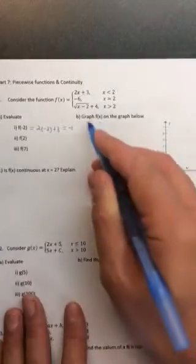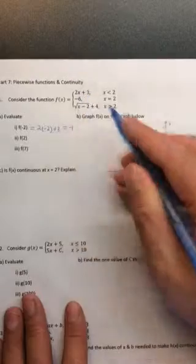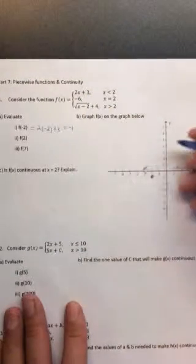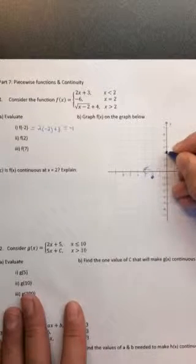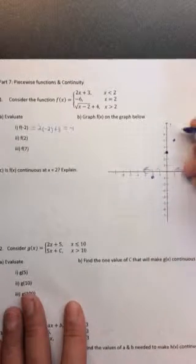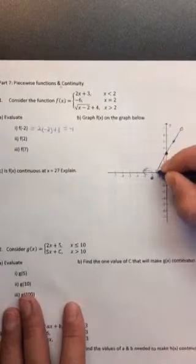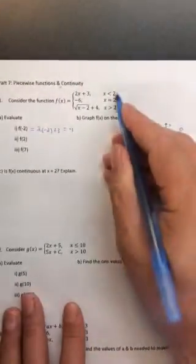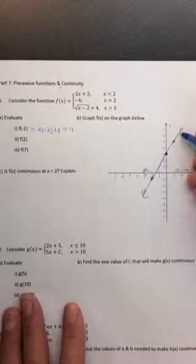Now it says to graph the function. So we've got this function, f of x is 2x plus 3 when x is less than 2. So until x is 2, we've got this graph y equals 2x plus 3. And that's a linear function with a y-intercept of 3 and a slope of 2. And it's everywhere that x is less than 2. So when x gets to 2, it stops being this linear function.